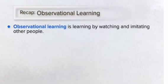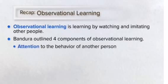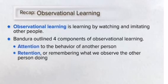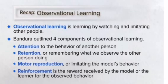Recap: Observational learning is learning by watching and imitating other people. Bandura outlined four components: attention to the behavior of another person; retention, or remembering what we observe the other person doing; motor reproduction, or imitating the model's behavior; and reinforcement, the reward received by the model or the learner for observed behavior.